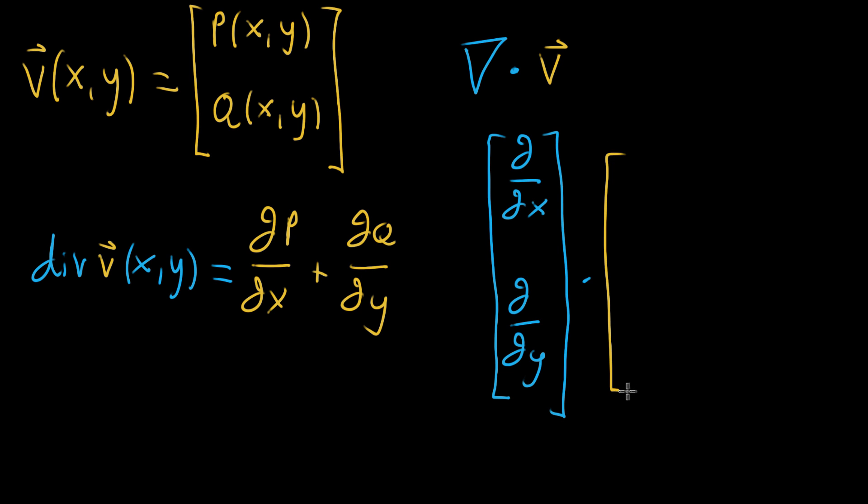And you imagine taking the dot product with that, and v, who has components, these scalar-valued functions, p of x, y, and q of x, y.